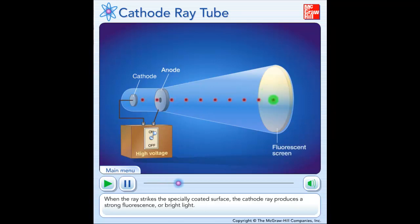When the ray strikes the specially coated surface, the cathode ray produces a strong fluorescence or bright light.